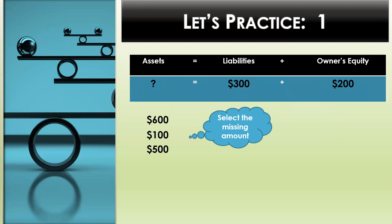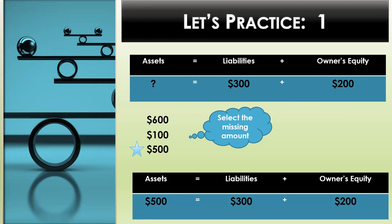Now let's practice this concept. Here we need to determine the missing amount. The missing amount is under assets, so we need to figure out what is liabilities plus owner's equity. We are given $300 and $200. When we add those two together, we have $500. So we know the missing amount is $500, because assets equals liabilities plus owner's equity, and the accounting equation remains in balance. Each side now equals $500.